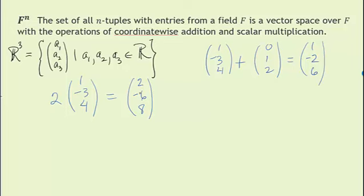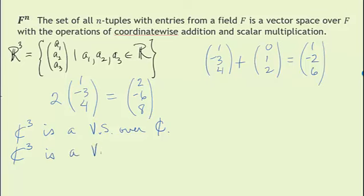If we took the complex numbers and all three-tuples of complex numbers, we could say that C^3 is a vector space over the field of complex numbers. We could also say that the three-tuples of complex numbers is a vector space over the real numbers. Certainly if you multiply a real number scalar to a three-tuple from C^3, you get another three-tuple from C^3, so we can say that.